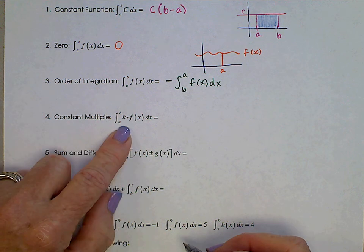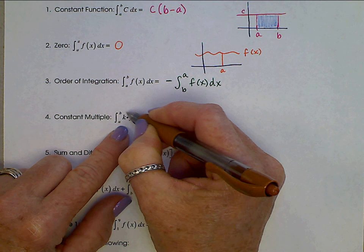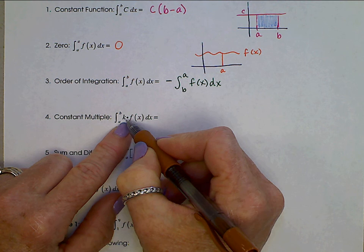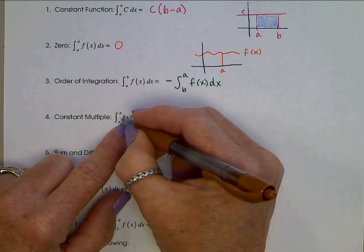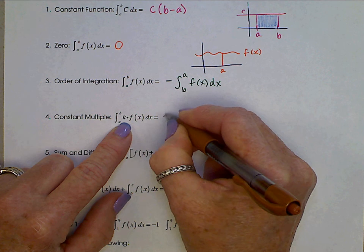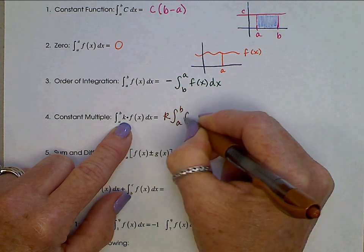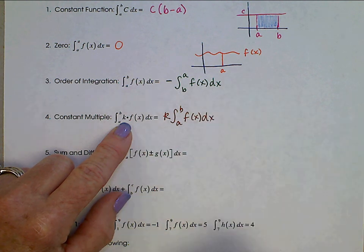Constant multiple, very similar to derivatives. When we have this constant here inside of this integral, just like when we had a constant multiple in front of a derivative, that constant can come outside. So we have k times the integral from A to B of f(x) dx. That constant just comes outside.